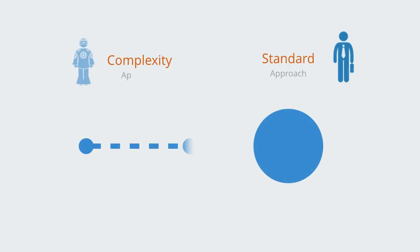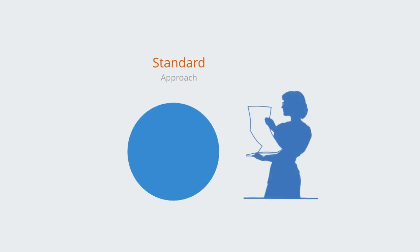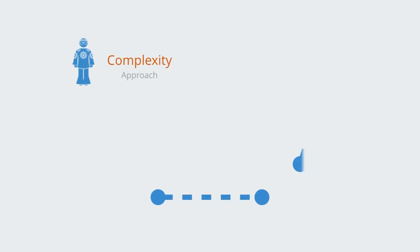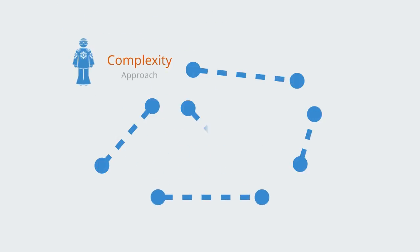Instead of focusing on the components of the organization, we focus instead on the connections. We do not try to achieve the desired outcome by defining component parts and trying to control those parts through a hierarchy. We instead create the connections — the context within which those components interact — and out of that we get the emergence of the global functionality of the organization.